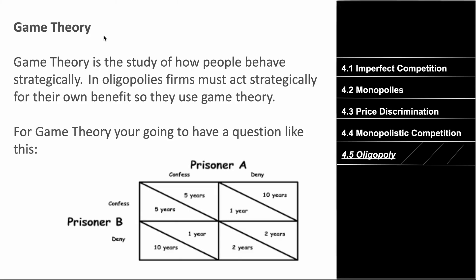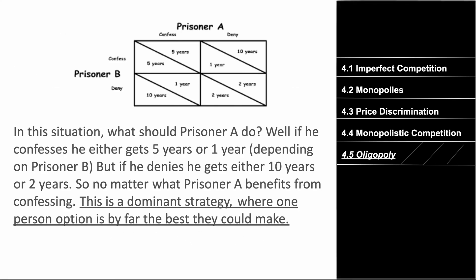There is no graph for oligopoly, but you need to understand game theory. Game theory is the study of how people behave strategically — in oligopolies, firms must act strategically for their own benefit. Consider two prisoners who can each confess or deny a crime. The payoff matrix shows the years each prisoner receives depending on both players' choices.